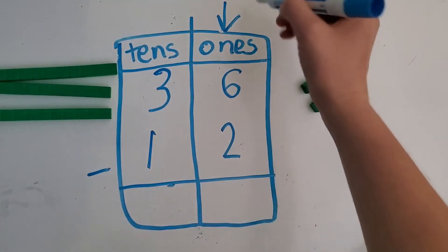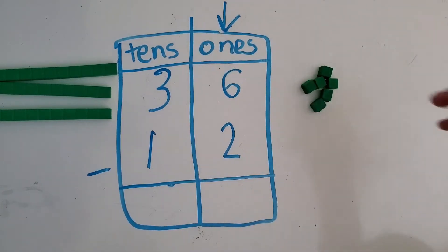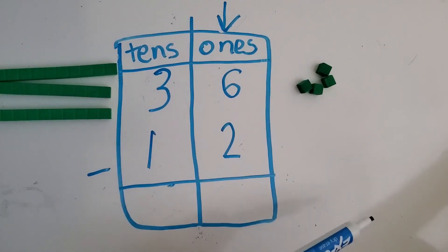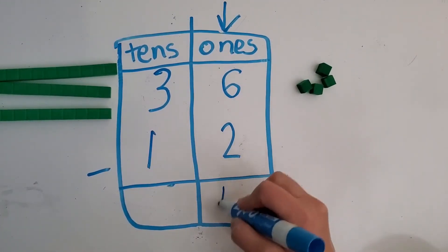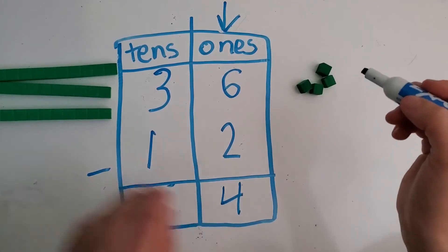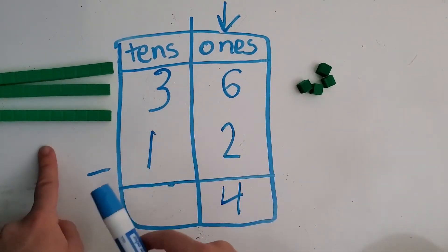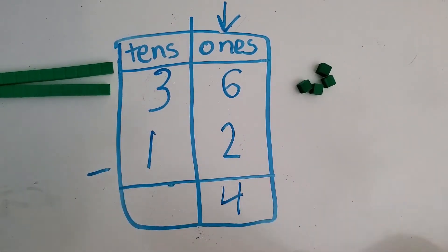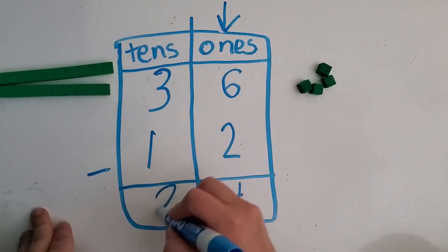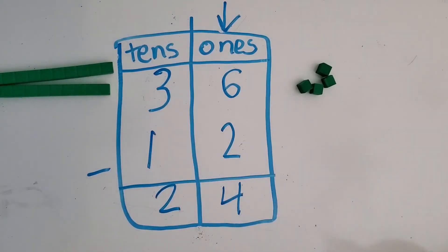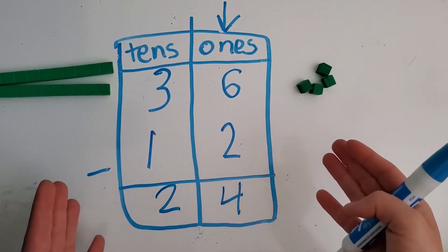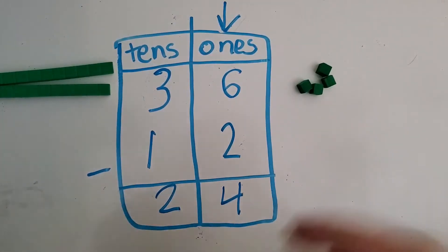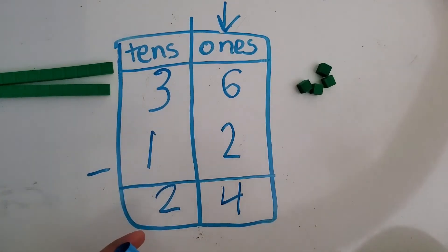Let's start with the ones — we always start on the ones with subtraction. So we have six take away two. How many ones are left? Four. Then over here we go to tens. We have three tens; we're going to take away one ten, which leaves us with two tens. So how many muffins are not blueberry? Two tens and four ones, or 24. 24 are not blueberry.